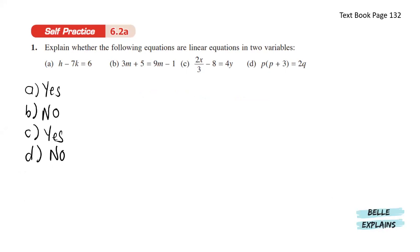h minus 7k equals 6. Yes, because there are two variables which are h and k and the highest power is 1.